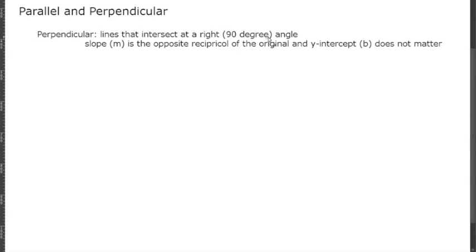Perpendicular lines are lines that intersect at a 90-degree angle, or a right angle. The slope is the opposite reciprocal of the original, and the y-intercept does not matter.